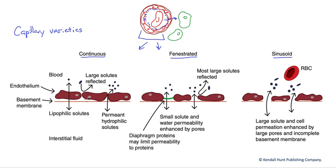Continuous capillaries have a continuous layer of endothelial cells forming the capillary wall. All epithelial cells are attached to a basement membrane — that layer of connective tissue secreted by these cells. They also have a glycocalyx, shown in blue, attached to the luminal surface of these endothelial cells that form the wall of those capillaries.